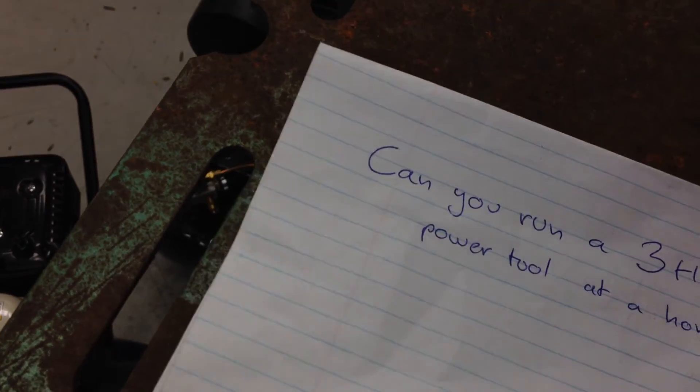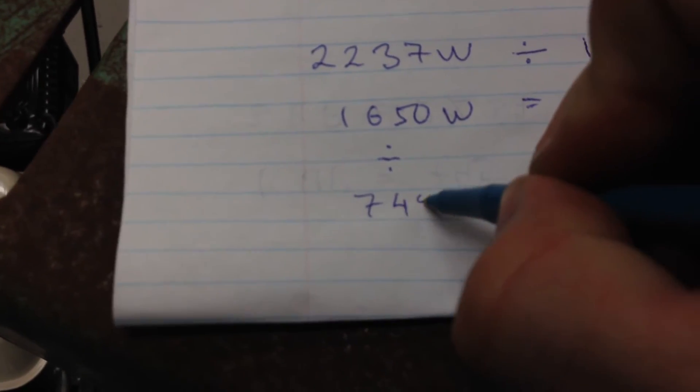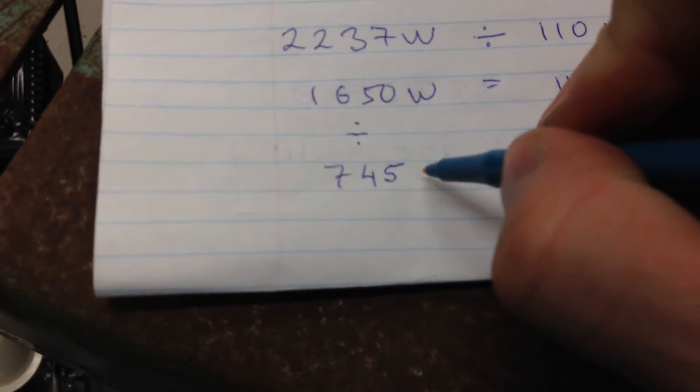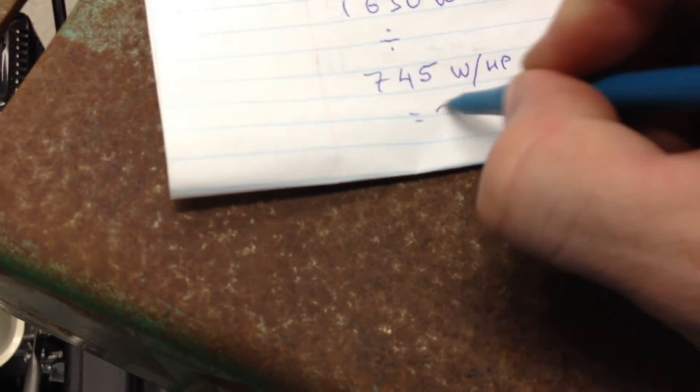Divided by 745, that's how many watts for every horsepower, and that equals 2.2 horsepower. When you enter it in the calculator, you'll see.